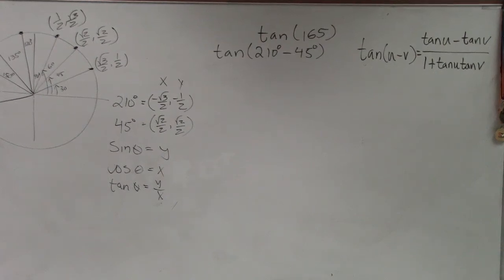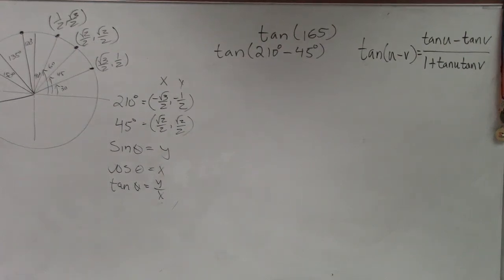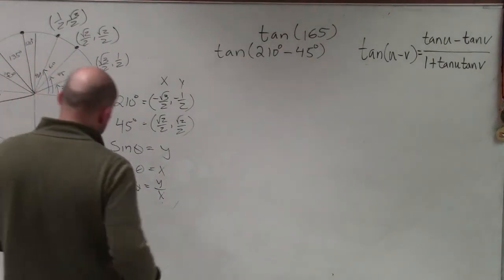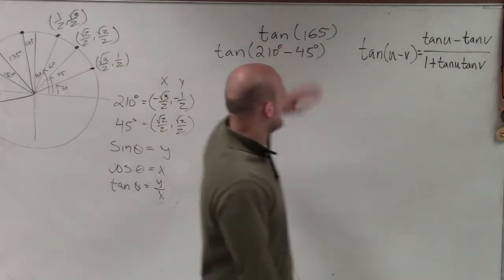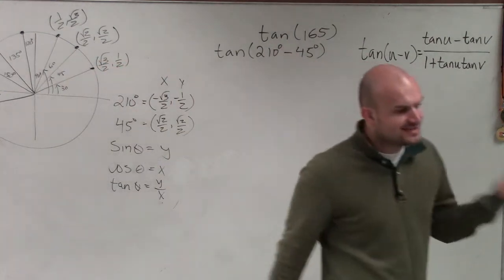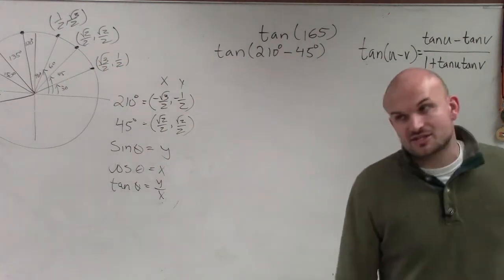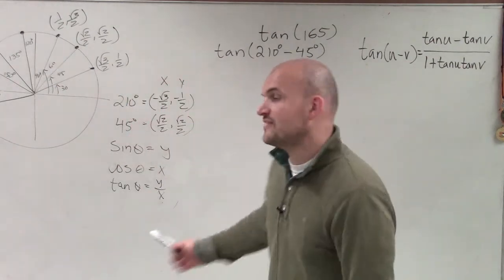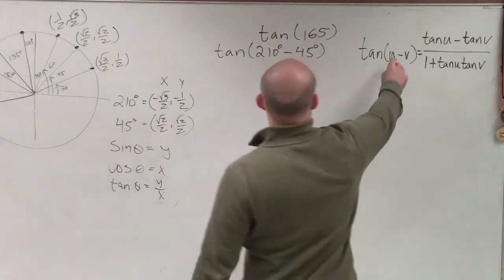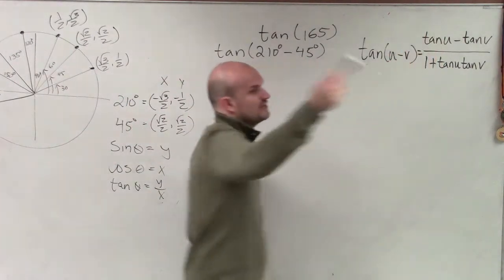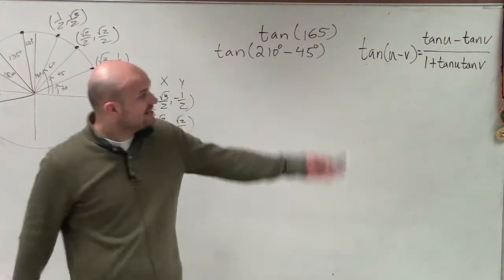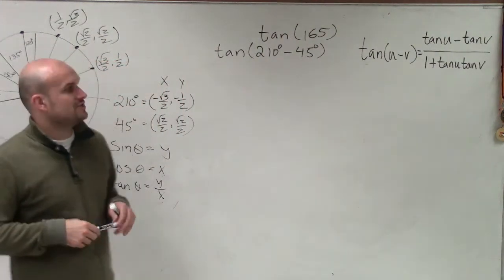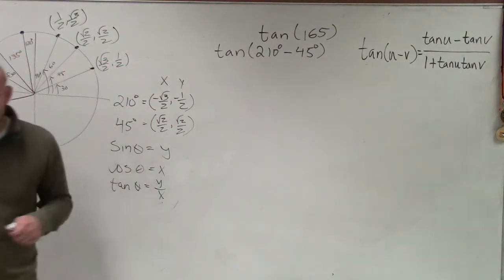In this example, what we want to do is evaluate tangent. We have tangent 165, rewritten as the difference of tangent of 210 minus 45 degrees. The formula for tangent of u minus v, where u and v are your two angles, is tangent of u minus tangent of v divided by 1 plus tangent of u times tangent of v.